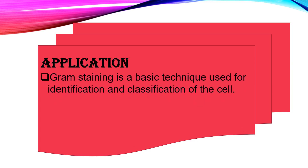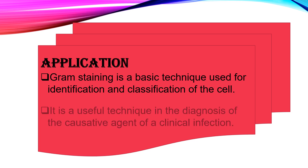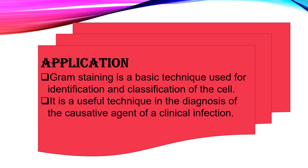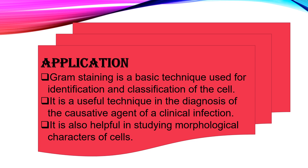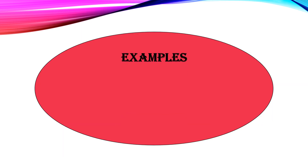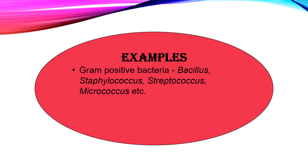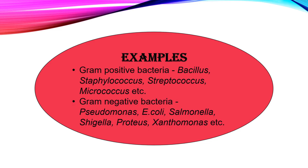Now let's see the applications. Gram staining is a basic technique used for identification and classification of cells. It is a useful technique in the diagnosis of the causative agent of a clinical infection. It is also helpful in studying the morphological characters of cells. Examples of Gram positive bacteria include Bacillus, Staphylococcus, Streptococcus, and Micrococcus. Gram negative bacteria include Pseudomonas, E. coli, Salmonella, Shigella, Proteus, and Xanthomonas.